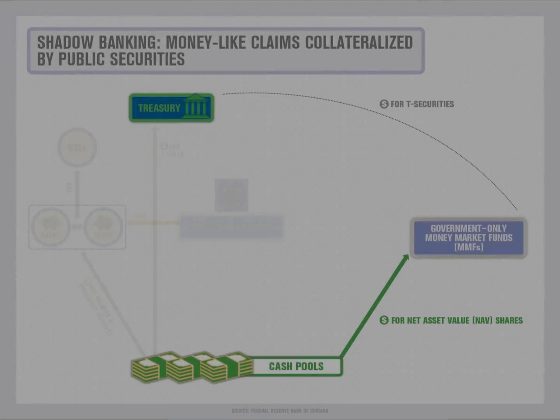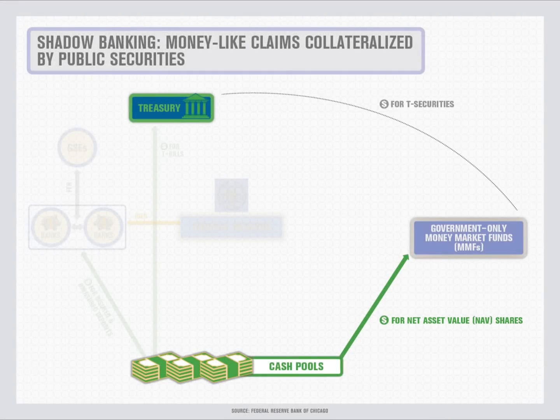As we mentioned earlier, there aren't enough short-term Treasury bills to meet demand for cash-like, risk-free investments. Therefore, cash pools are forced to look for alternative private cash-like safe investments — things that have the characteristics of cash, but are not guaranteed by the full faith and credit of the United States government.